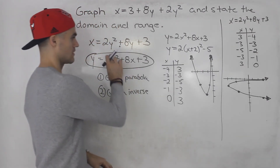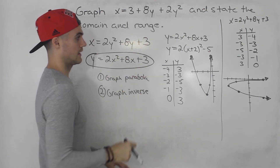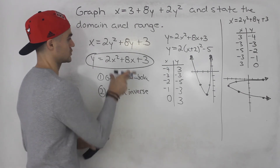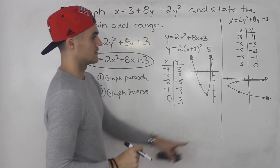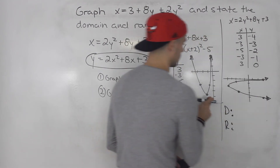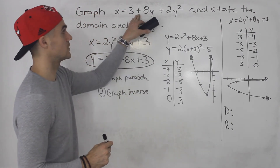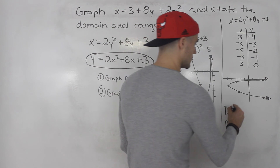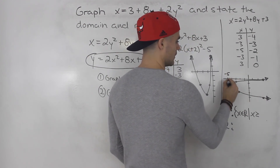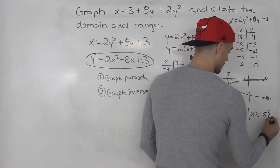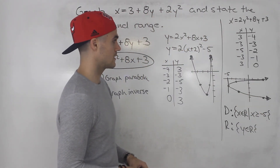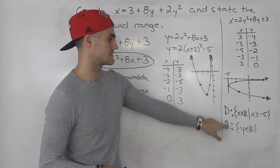So first we graphed the parabola, interchanged the x and y's, and graphed the inverse — that is the answer to the question. Now for the domain and range of the inverse: the domain is x must be greater than or equal to negative 5, since all x values must be at least negative 5. The range is y can be anything. That's the graph, domain, and range.